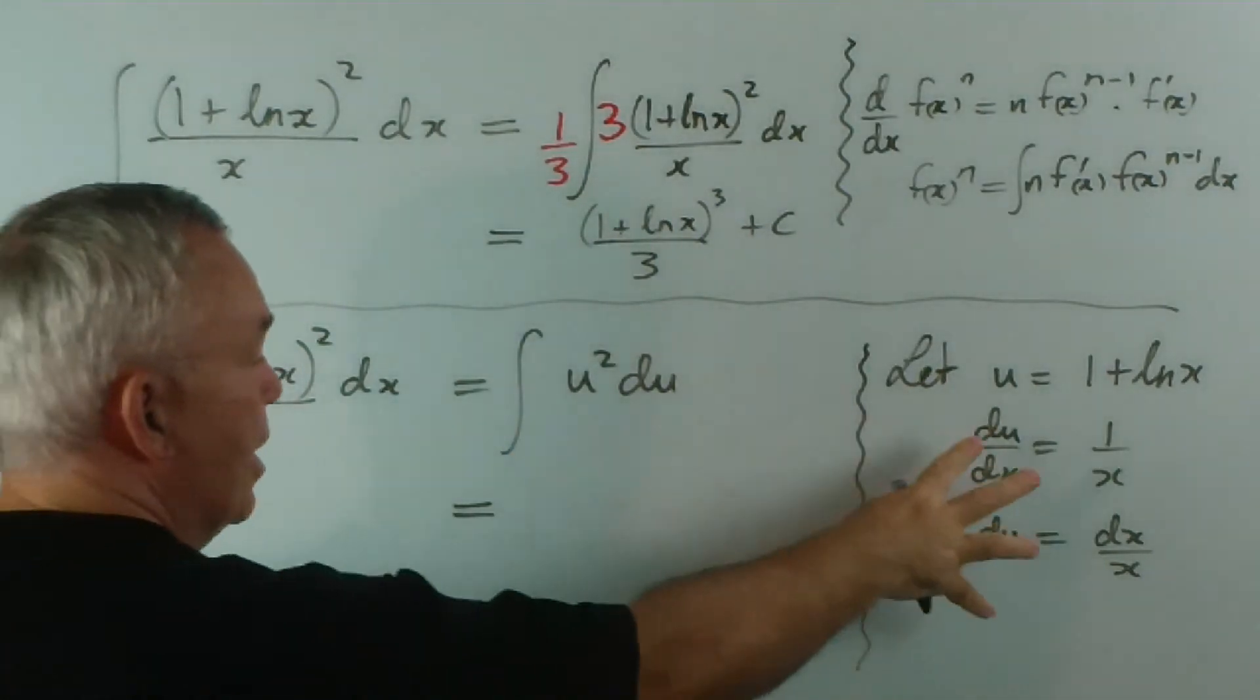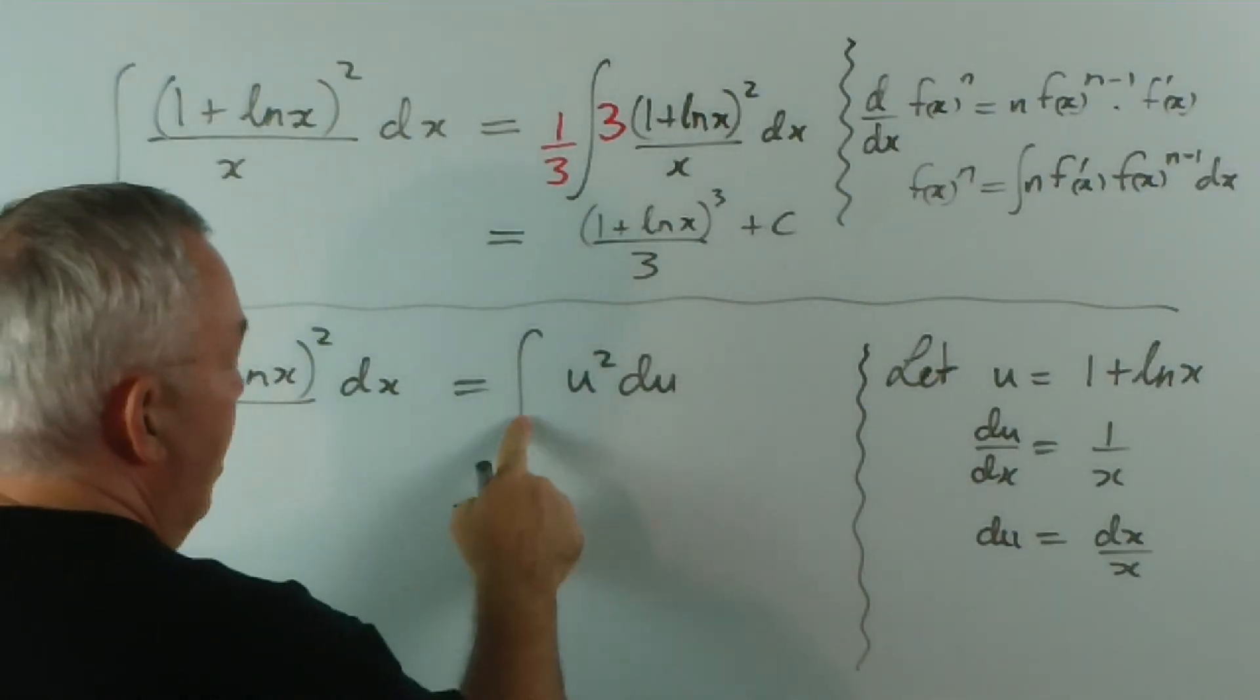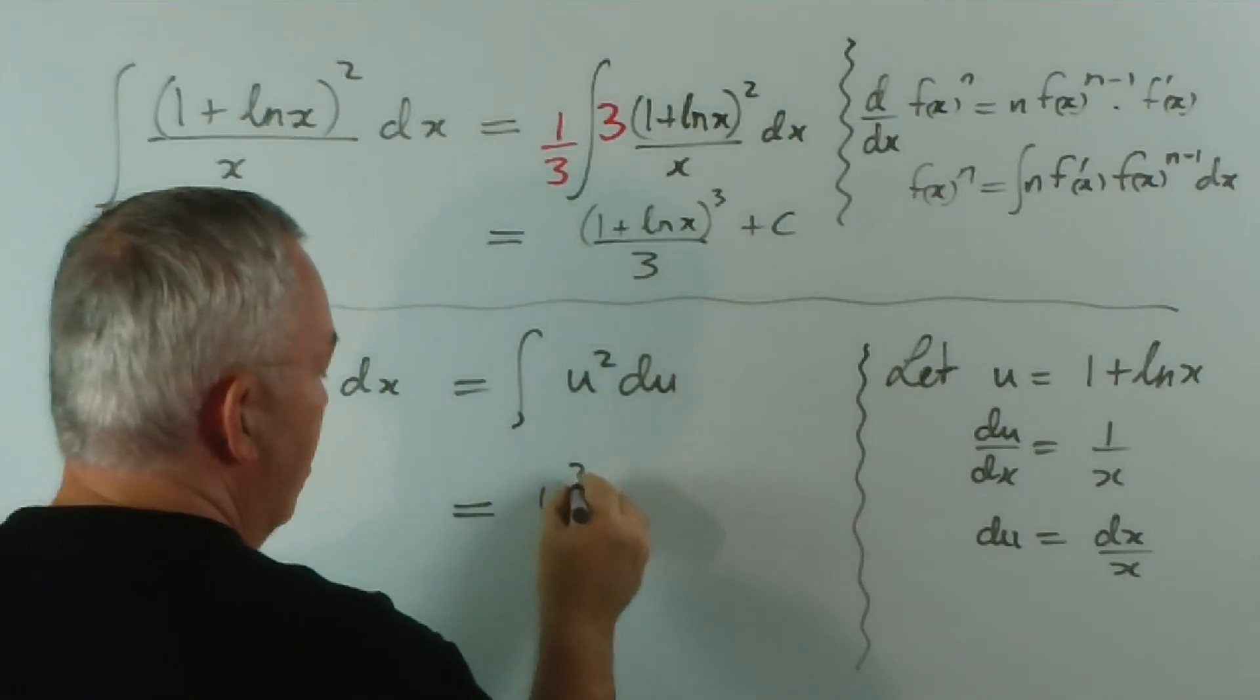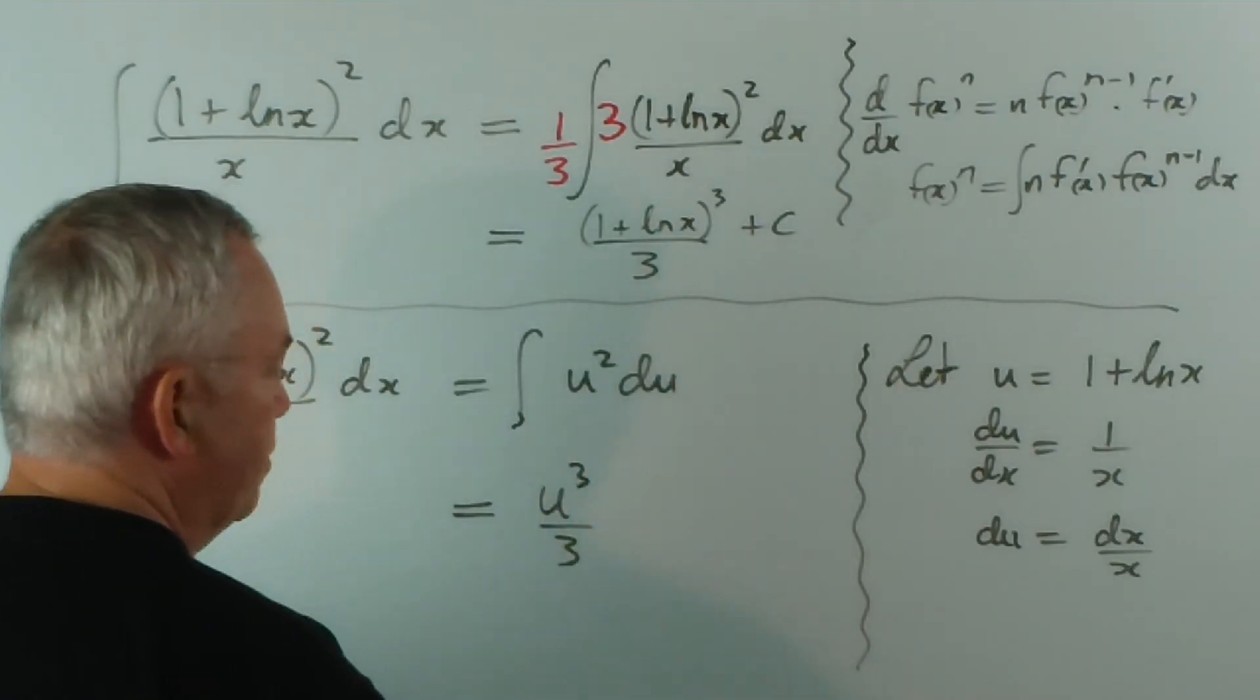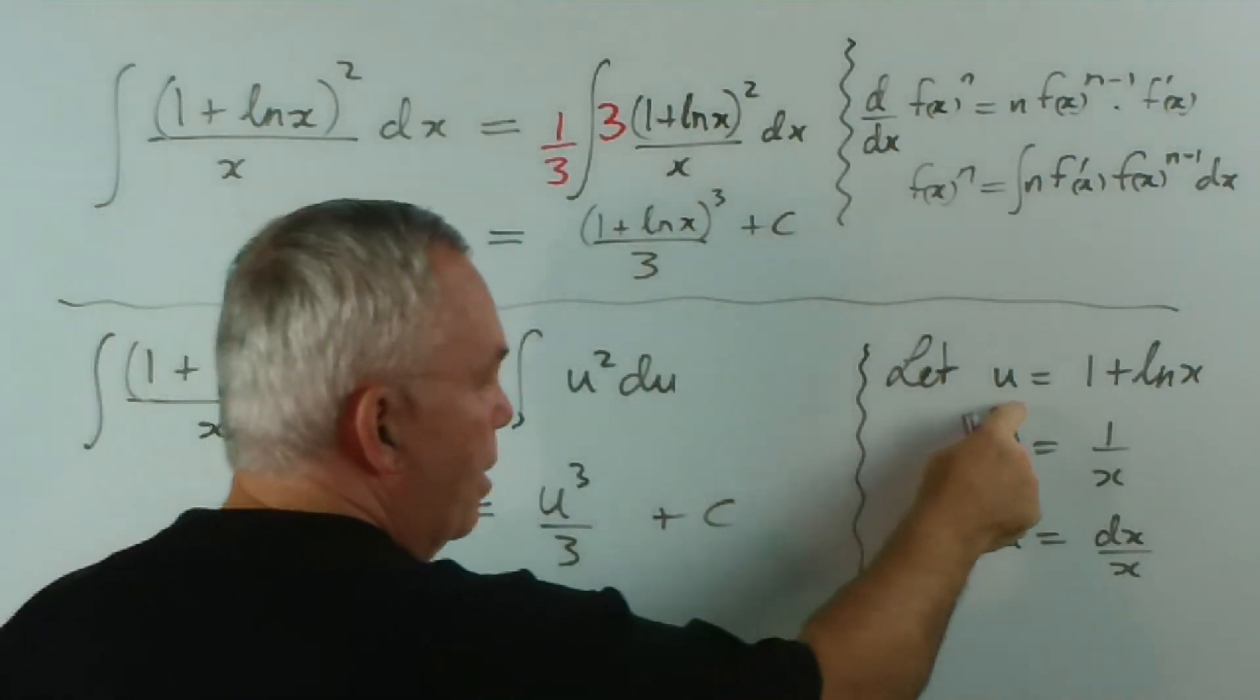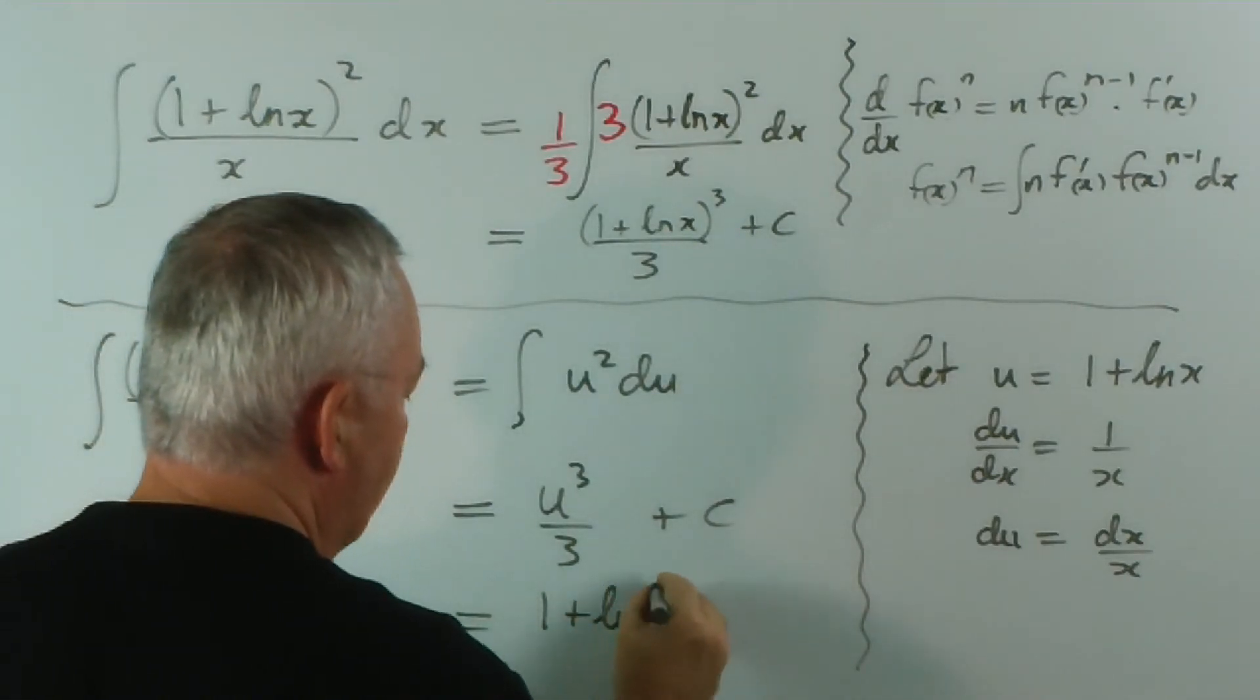So, sometimes the substitution—if you're confused, the substitution is an excellent way to go. And the integral of u squared to u is u cubed on 3, plus c, of course. And if we substitute back for u, it's 1 plus log x.